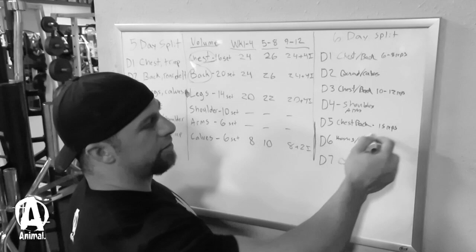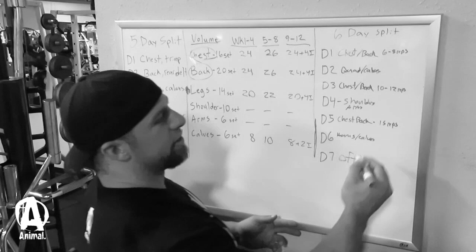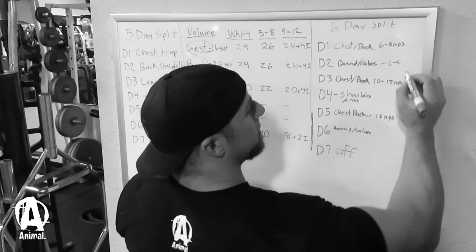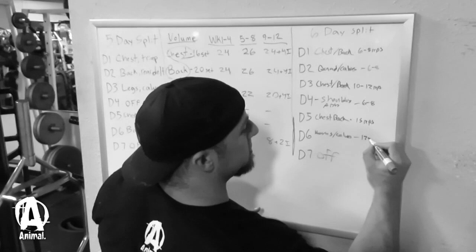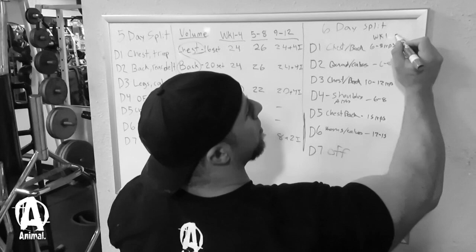Now, weekly, we're going to rotate through those rep ranges. So week one and week two, those can stay the same. What's going to be different is for week one on quads and calves, it would be six to eight. Shoulders and arms, we can do six to eight. And hams and calves, we can let this be the higher rep leg day and keep that twelve to fifteen. So that's week one.